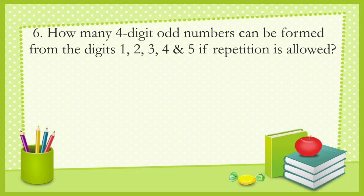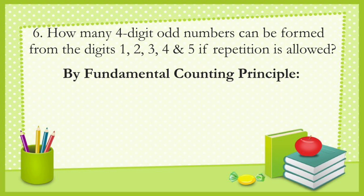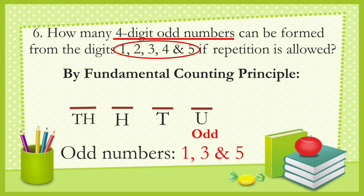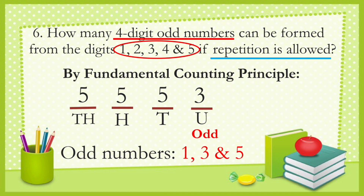Number six: how many four-digit odd numbers can be formed from the digits 1, 2, 3, 4, and 5 if repetition is allowed? By the fundamental counting principle, the units digit must be odd. The odd numbers available are 1, 3, and 5, giving three choices for the units digit. Since repetition is allowed, each of the thousands, hundreds, and tens digits has five choices. So 5 × 5 × 5 × 3 equals 375.